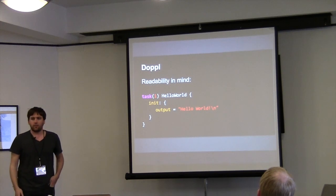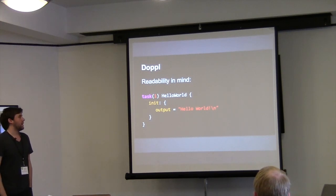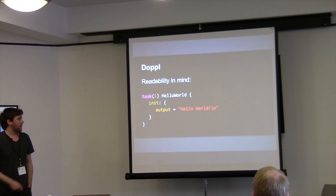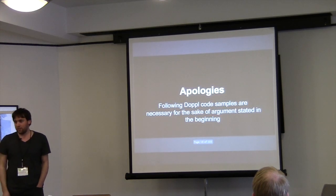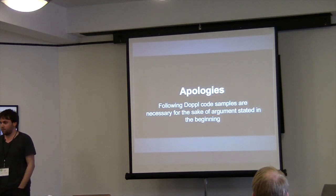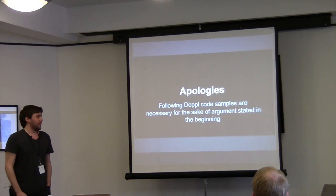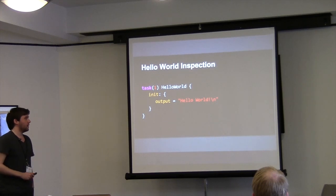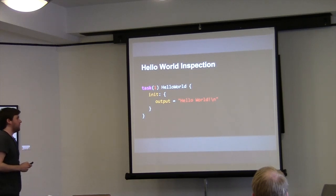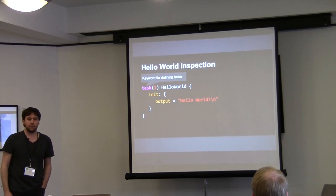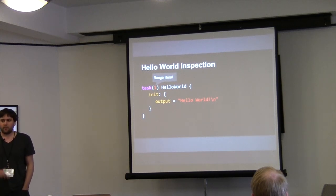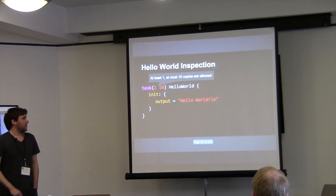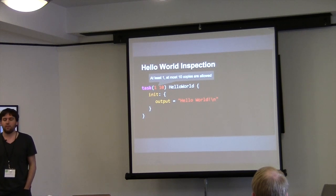This is the first piece of code that Doppel has — it's the hello world. There are many things here that I will go through, but we need this code to implement our C++ backend. We have a keyword for defining tasks. We have a range literal to state the amount of threads being allocated at compile time. We can give a range to it to make it a parameter.